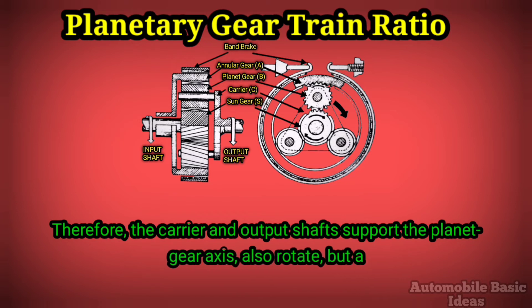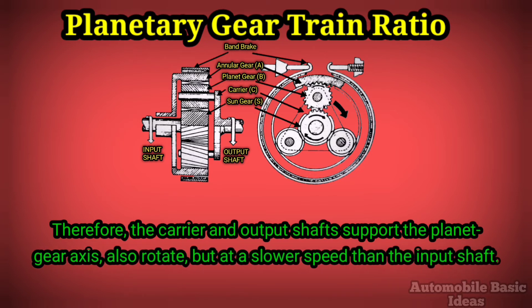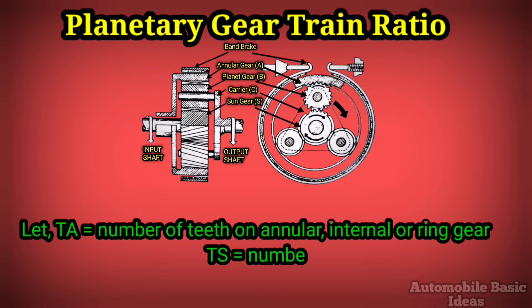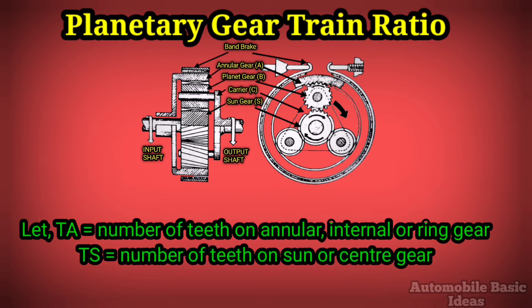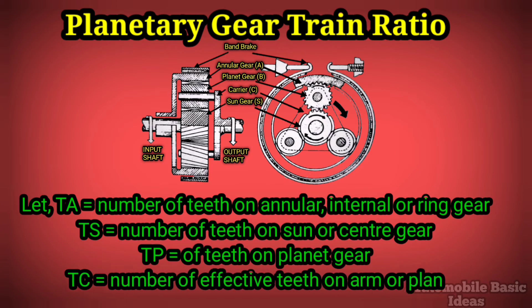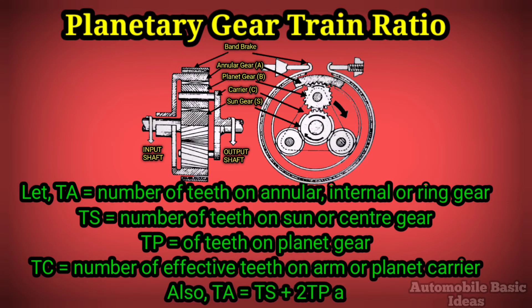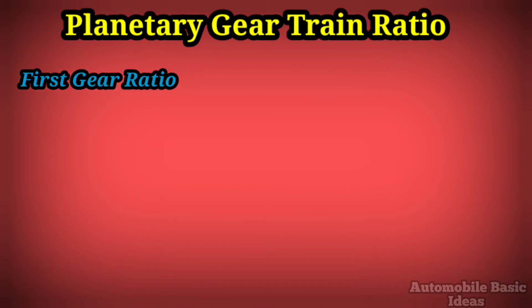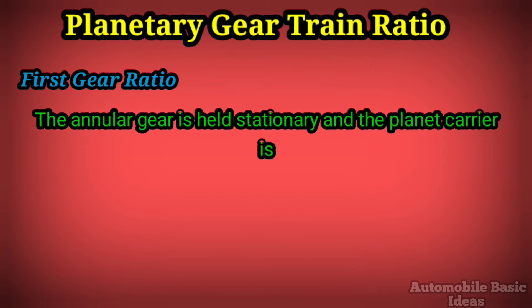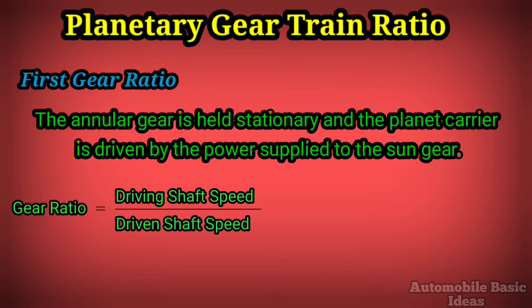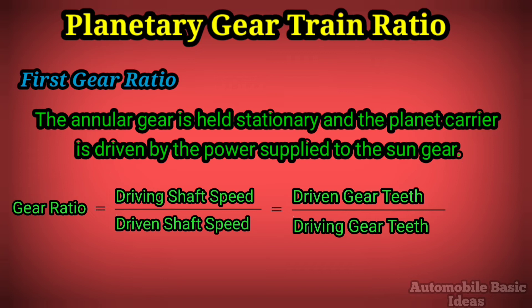Therefore, the carrier and output shafts also rotate, but at a slower speed than the input shaft. Let: Ta = number of teeth on annular (internal or ring) gear; Ts = number of teeth on sun or center gear; Tp = number of teeth on planet gear; Tc = number of effective teeth on arm or planet carrier. Also: Ta = Ts + 2·Tp, and Tc = Ts + Ta. First gear ratio: the annular gear is held stationary and the planet carrier is driven by power supplied to the sun gear. Gear ratio = driving shaft speed ÷ driven shaft speed = driven gear teeth ÷ driving gear teeth = planet carrier teeth ÷ sun gear teeth.